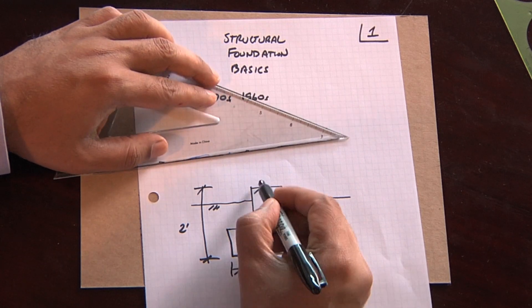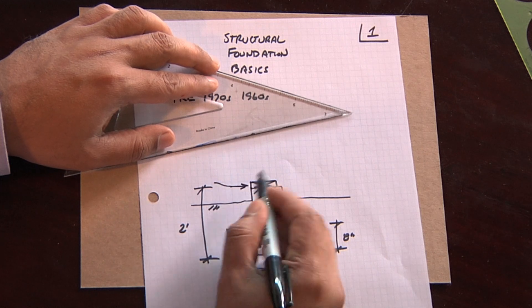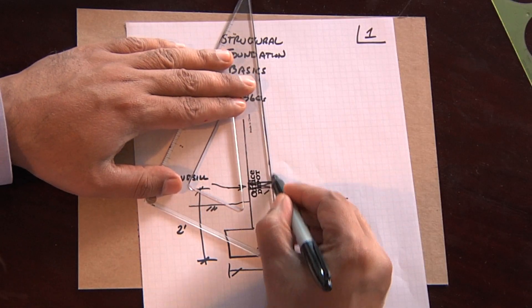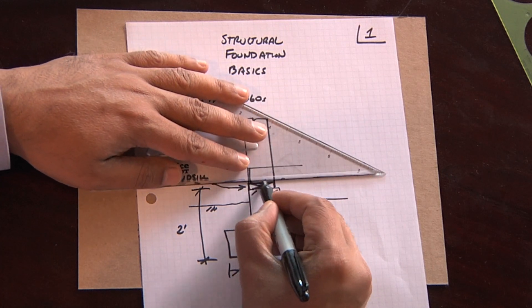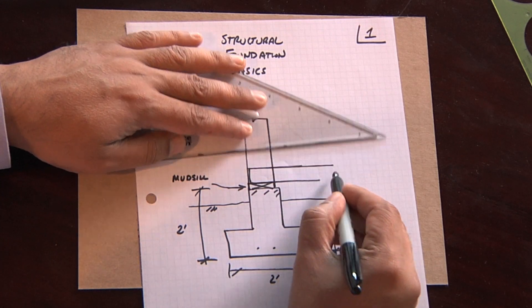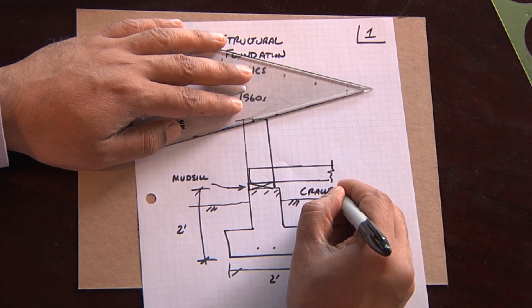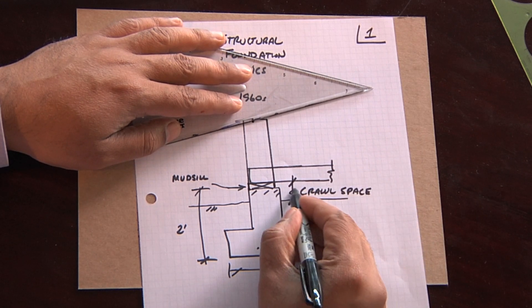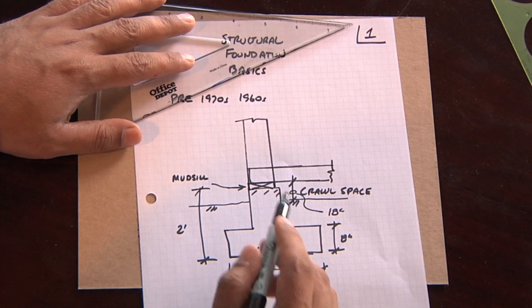On the bottom, there's a what we call a mud sill. And then you have your building constructed on top of that. And then there's a floor joist system. This area in here is called the crawl space. And although I didn't draw it to scale here, that is usually a minimum of 18 inches. It's a little bit larger than the way I drew it. And then this is your wall system.